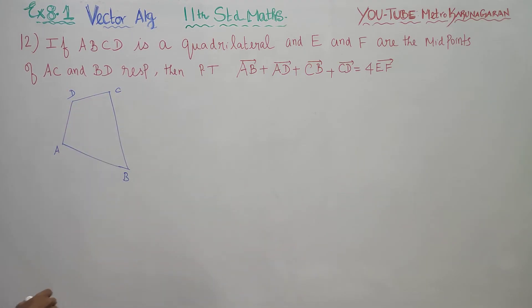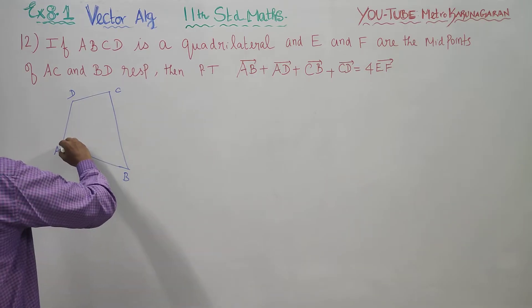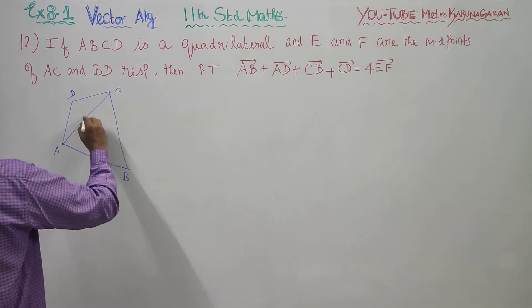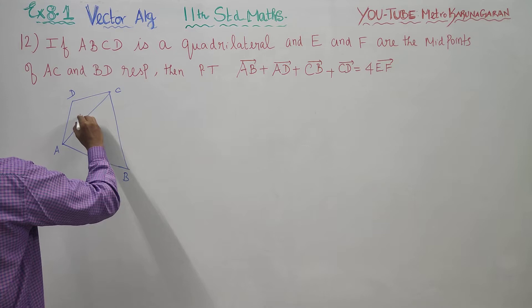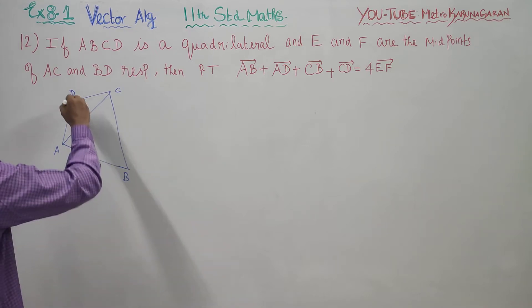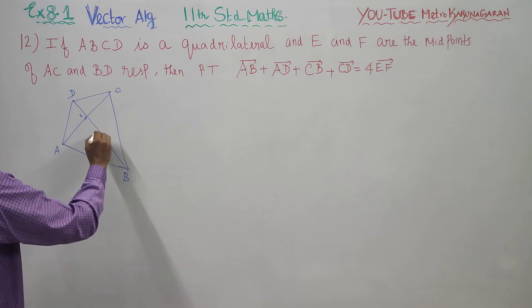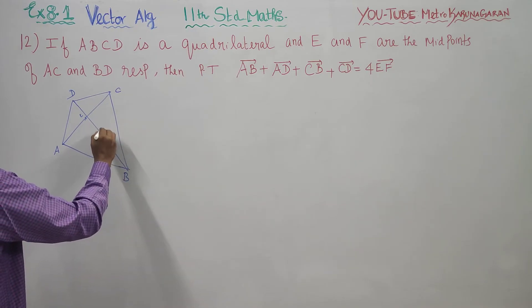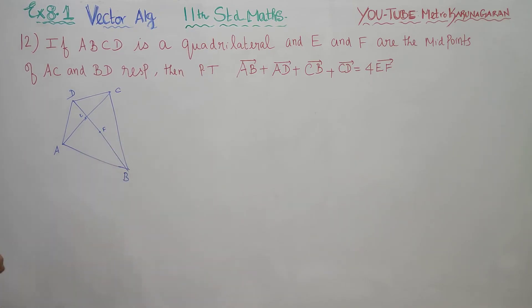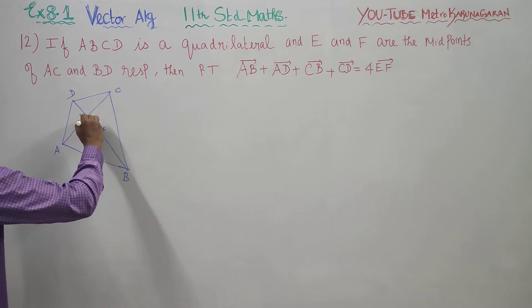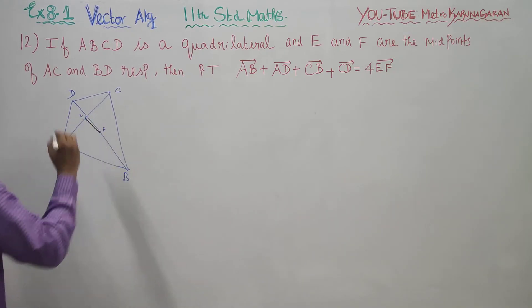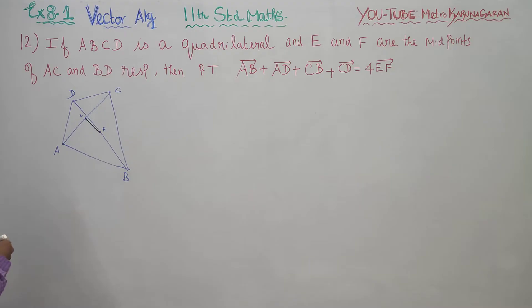E and F are the midpoints of AC and BD. Now you just join E and F. This line is my EF vector.